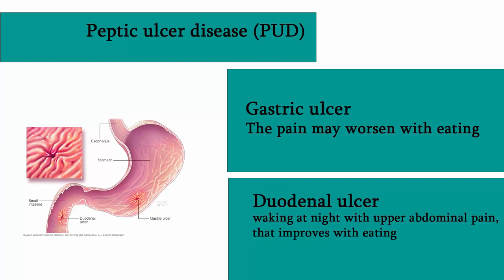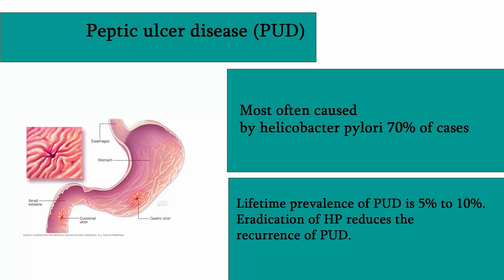Peptic ulcers may be asymptomatic. A peptic ulcer is defined as disruption of the mucosal integrity of the stomach or duodenum, leading to a local defect or excavation due to active inflammation.